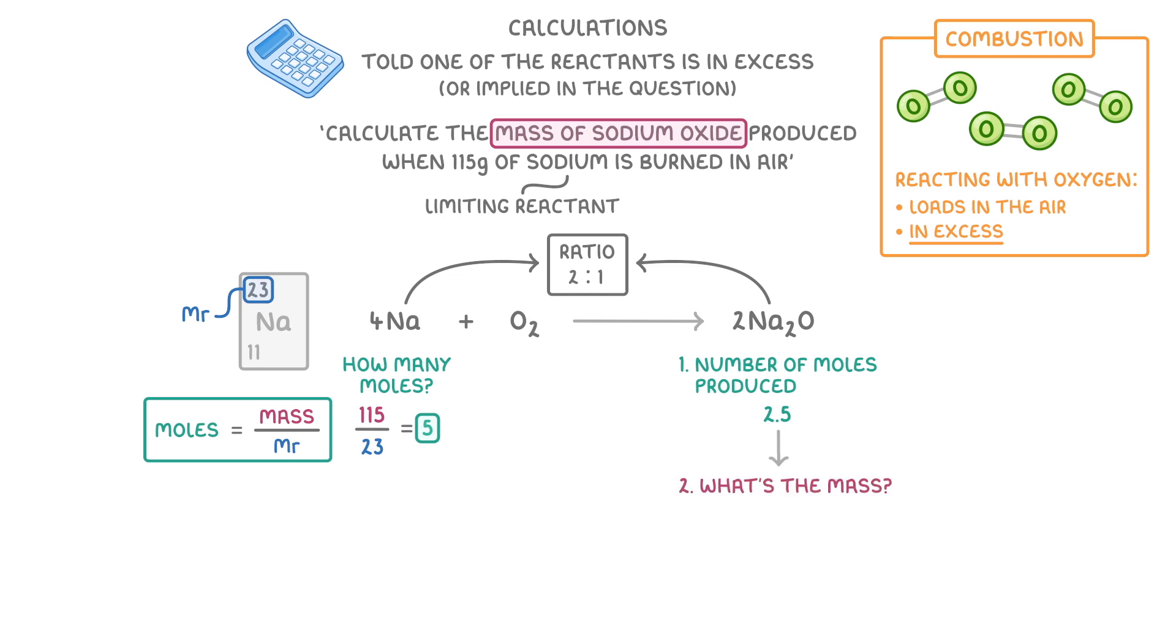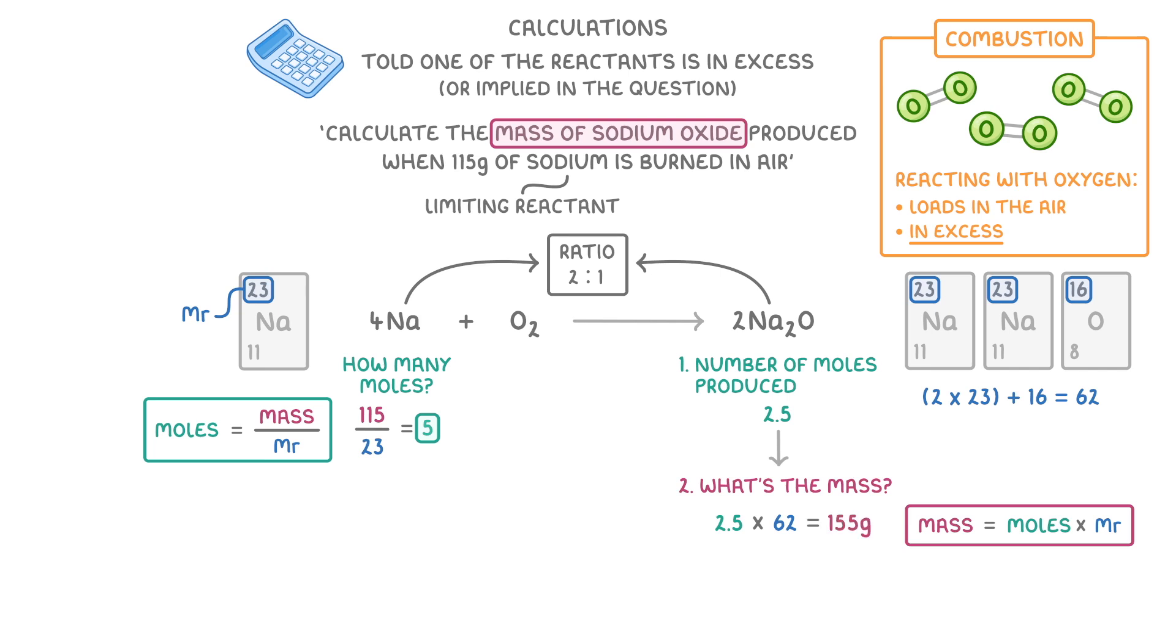So now we need to find what the mass of 2.5 moles of sodium oxide is. To do this, we're going to have to take our equation and rearrange it to get mass equals moles times Mr. We already know the number of moles is 2.5, so we just need to get the Mr of sodium oxide, which we get by taking 2 times 23, because there are two sodiums in Na2O, and adding 16 for the oxygen, giving us 62. Then we can plug these in to get 2.5 times 62, giving us 155 grams, which is the mass of sodium oxide that we'll get.